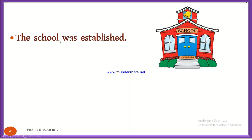Here you can see: 'The school was established.' Who established the school? It may be that we don't know. So in that situation, if we don't know who did the action, we can use passive voice. Number two — suppose who established the school? You know it, but you don't want to disclose it to everybody. In that situation also, you can use passive voice.